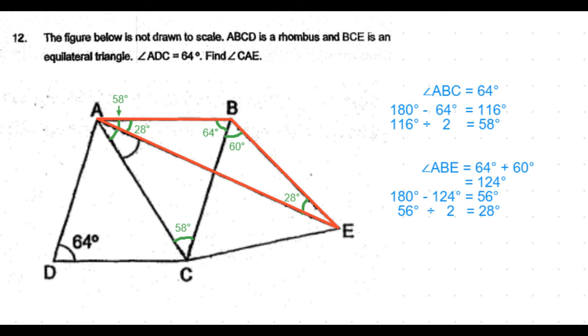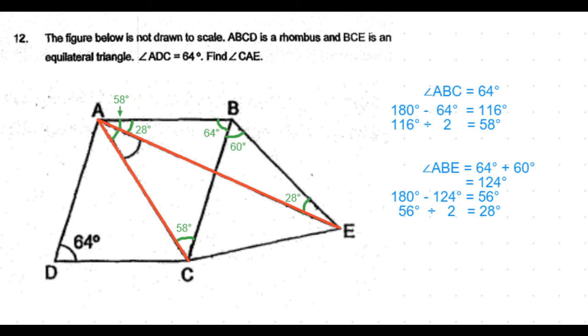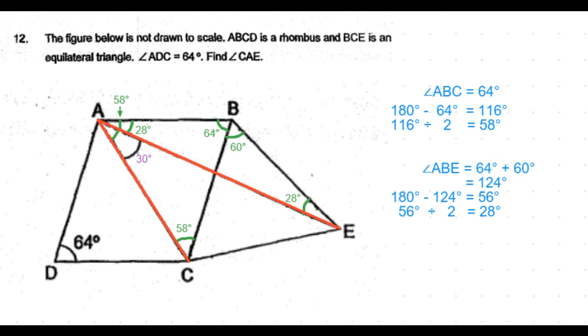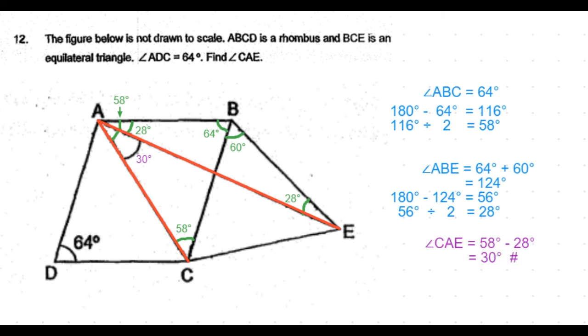Now consider the angle that we need to find out, CAE. This is just the difference between the two angles that we have already found out. So it is 58 degrees minus 28 degrees, which is 30 degrees.